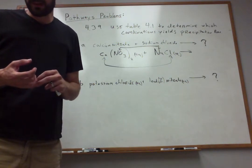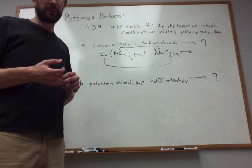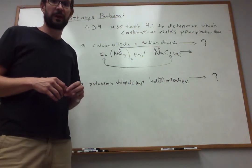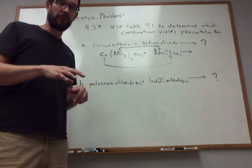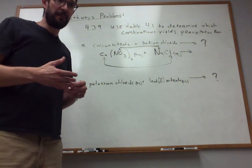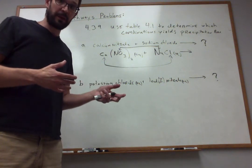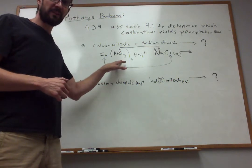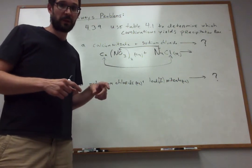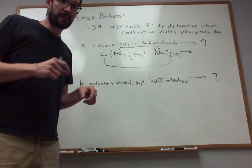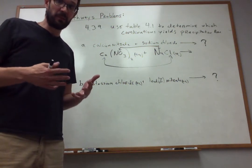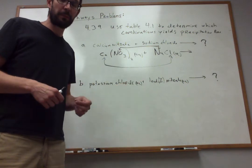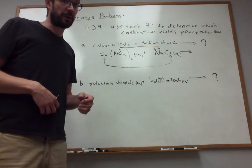The other possibility is that we mix these ions together and no insoluble compound results — in that case we'd say there's no reaction. What's crucial to predicting whether a reaction occurs is knowledge of the solubility rules. This problem refers to Table 4.1, which almost certainly lists the solubility rules for different compounds. That list tells you if something is going to be soluble or insoluble. When predicting products, we're always on the lookout for insoluble compounds. If you make something insoluble by those rules, a precipitate will form and a reaction will occur.